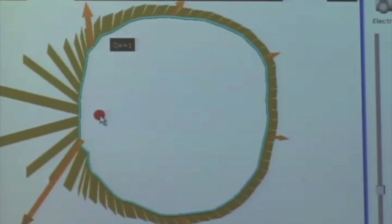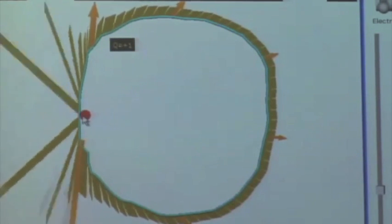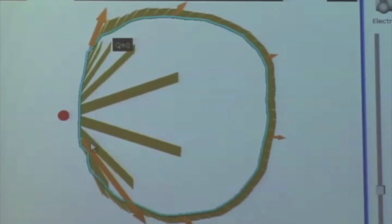So, here, charge is inside, net flux is positive. Charge is outside, then we get some negative here, positive elsewhere adds up to zero.